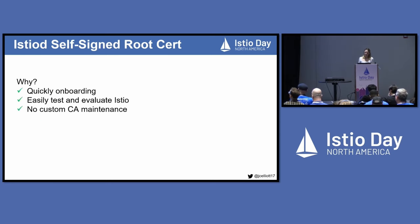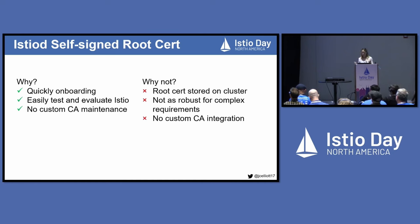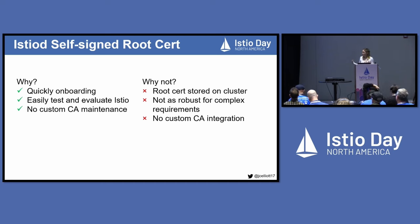Why might you choose this solution? It's really easy to get started with and quickly onboard and test Istio in your test environments. It doesn't require that you configure your own CA at all — Istio-D handles that for you. Why might this not work for you? Maybe you don't want your root certificate's private key stored on your cluster — Istio creates an Istio CA secret, a Kubernetes secret containing the root cert's private key. Also, this isn't as robust as the other solutions, and by nature it doesn't provide any integration with your external or custom certificate authority.